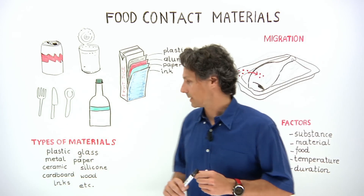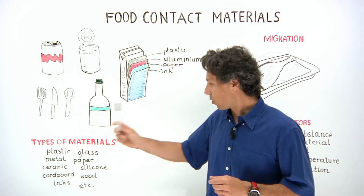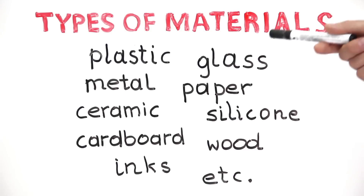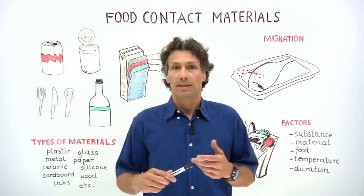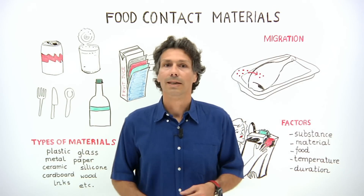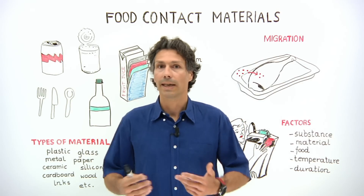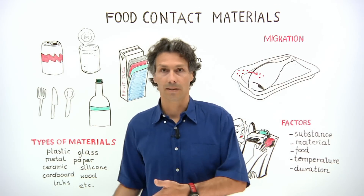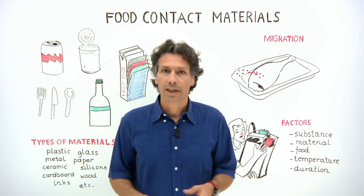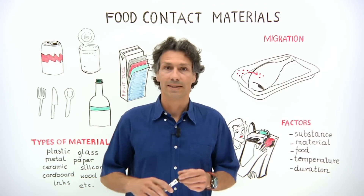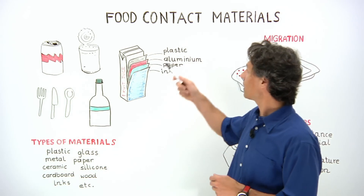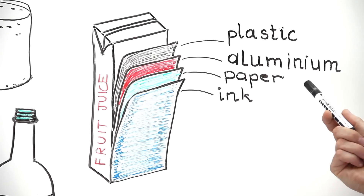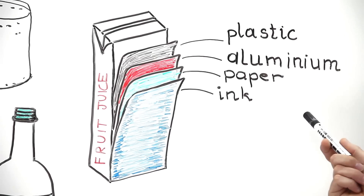Many different materials can be used in these articles. They are often made from plastic, but also from glass in jars and bottles, metal in cans, ceramics, silicon, carbon, wood, inks, etc. Often a combination of materials is used. For example, a fruit juice carton might include layers of plastic, aluminum, paper and inks.